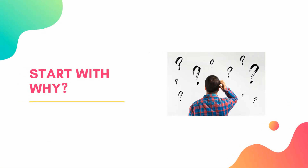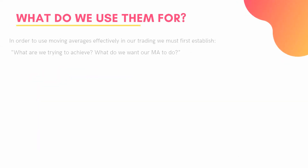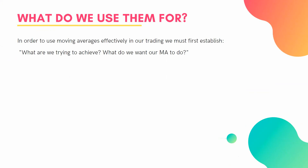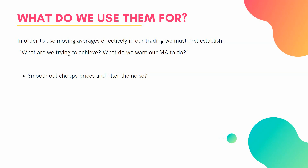The first thing we've got to do when looking at moving averages is start with why. People often start looking for the end result — the best moving average — but we've got to know what we're trying to get from it. In order to use moving averages effectively, we must first establish what we want our moving average to do. One reason is to smooth out choppy prices and filter out the noise, which is a common and very good use — but not all moving averages are equally good at this.